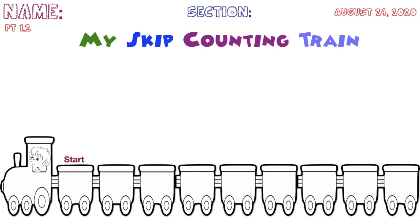In the train, you're going to have your own skip counting. I'll give you an example using skip counting by 2s, but I want you to create your own. You may use skip counting by 3, 4, 5, 10, 100, 1500 — something like that — but don't copy my example. Choose your own starting number.